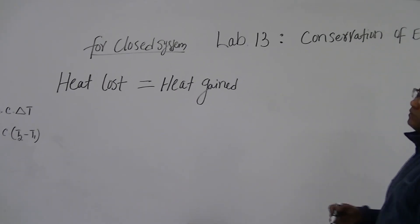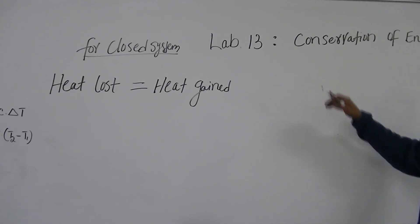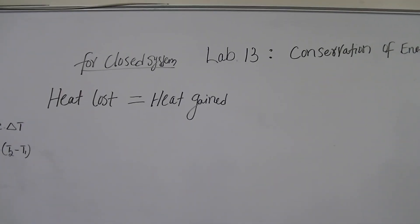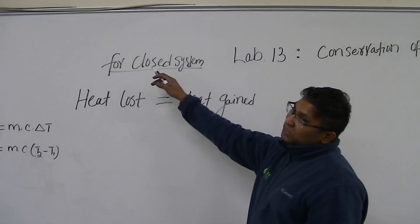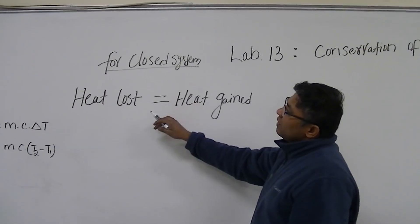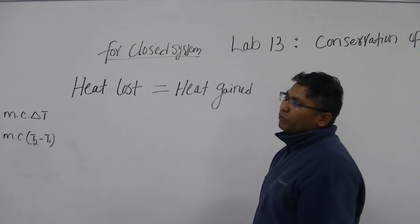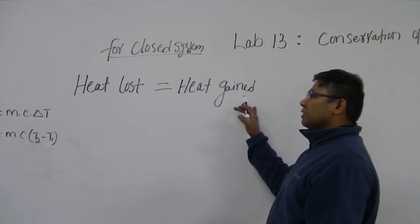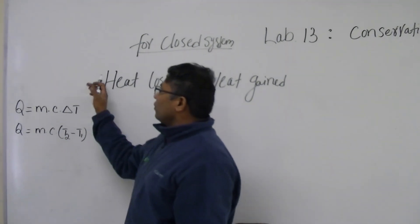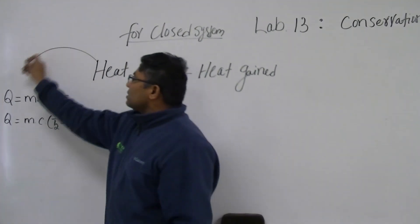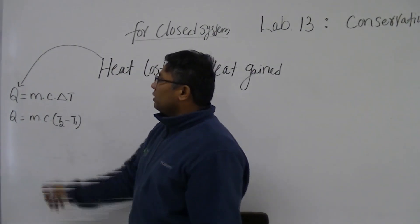Today we're going to do Lab 13, which is conservation of energy. We know that for a closed system, the total heat lost by an object is always equal to the heat gained by another object. So what is the equation for heat? Heat is denoted by the letter capital Q.